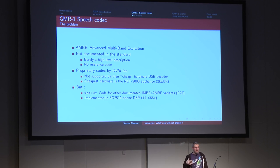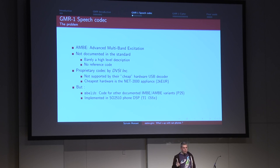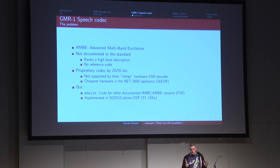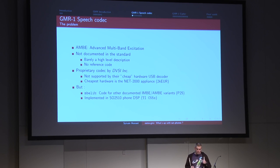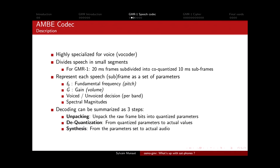Our first lead was that P25 uses an AMBE variant that is actually documented - you can download the standard and get all the math and specs to write a decoder. Somebody wrote an open-source decoder called mbelib, which we could use as a base. The other lead was that the codec must be somewhere in the phone - the phone is obviously capable of decoding audio, so maybe we could find it there. But before searching, it's good to understand how the codec works.